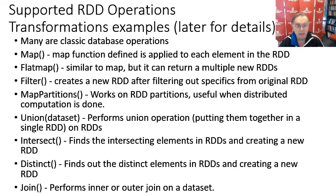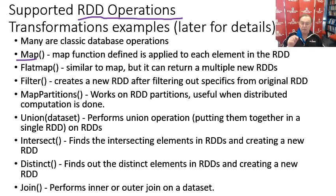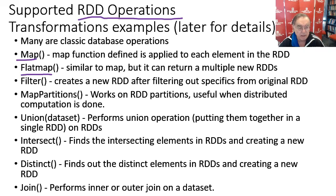RDDs have these operations or transformations, and they are classic database operations. We use the technical database definition of map: a map is a function applied to every element of the RDD. A flat map is related to maps and can produce more complex answers. A filter is more general — like clustering — because you're running a complex algorithm where the final RDD is not simply related to the original one. With a map, the final RDD is the original one with just a function applied to each element.